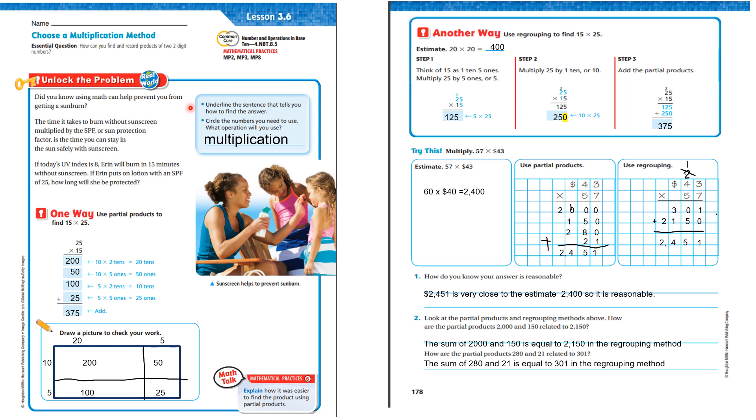If today's UV index is 8, Erin will burn in 15 minutes without sunscreen. If Erin puts on lotion with an SPF of 25, how long will she be protected? Underline the sentence that tells you how to find the answer. I'm going to highlight it instead of underline it. Circle the numbers you need to use. I need to know 15 minutes and the 25 is the SPF. What operation will you use? We're going to use multiplication.